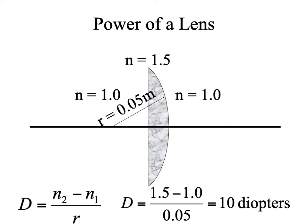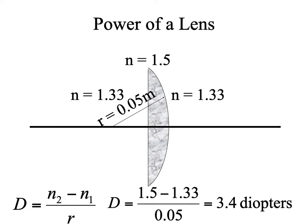What if we put this lens in water? What's going to change is the index of the medium, and that means delta N is going to be less. 1.5 minus 1.33 gives us 3.4 diopters for this lens in water. So if you were to take an IOL, which is calculated for its power in aqueous, and just put it in air on a lens meter, you're going to get a much higher value because it's calculated for a delta N in which the medium is basically 1.33.